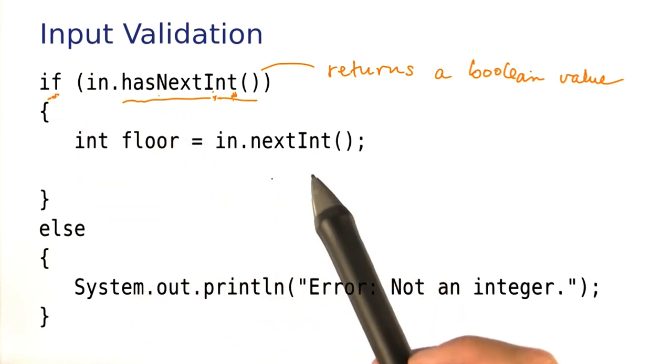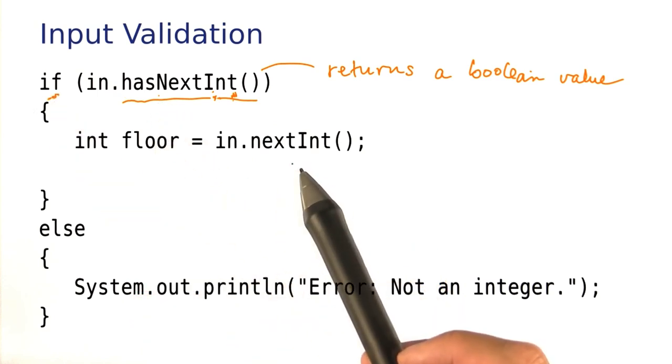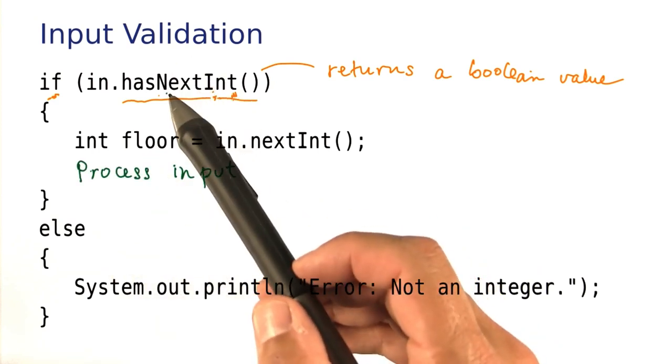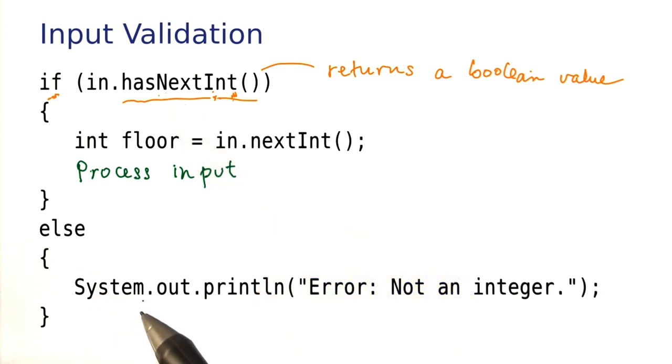If the method returns true, then it is safe to call nextInt. We can read the input and then process it in any way we want. If on the other hand, this method returns false, then we print an error message.